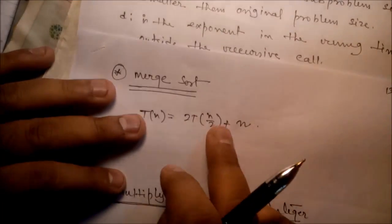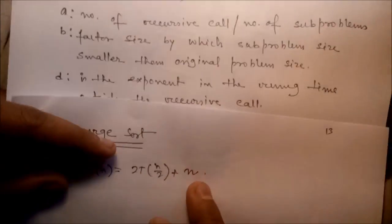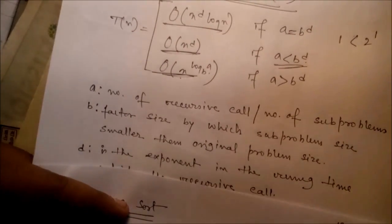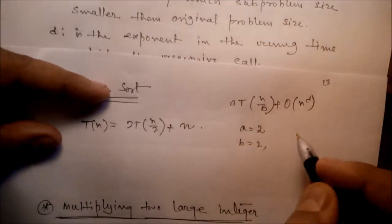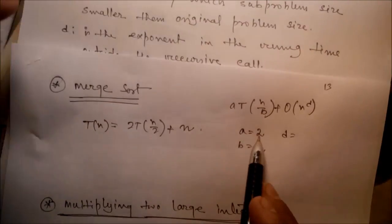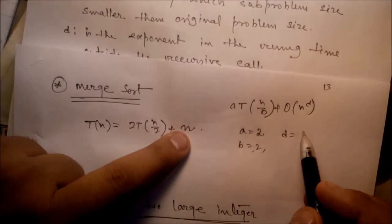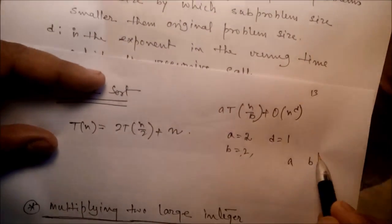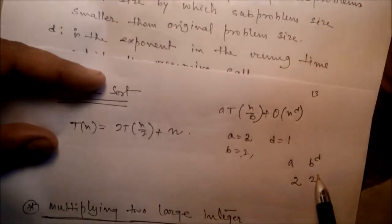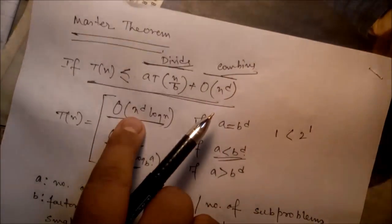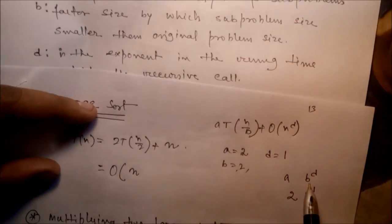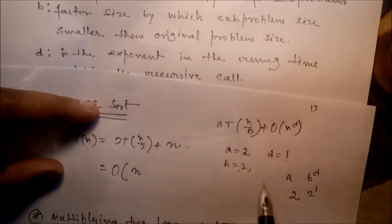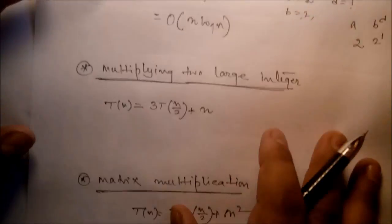Let's validate with merge sort: T(n) = 2T(n/2) + n. Matching the formula, a = 2, b = 2, d = 1. Check: a = 2 and b^d = 2^1 = 2, so a equals b^d. Therefore, the complexity is O(n^d log n) = O(n^1 log n) = O(n log n).